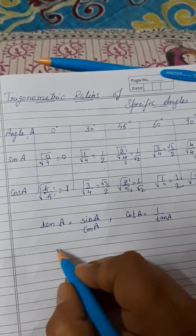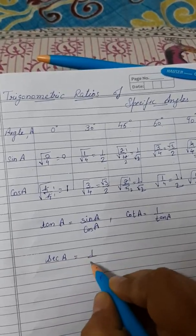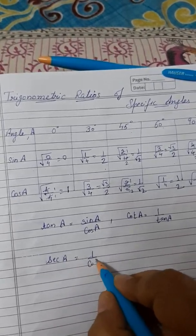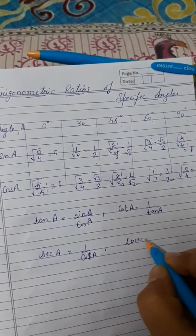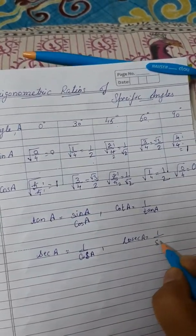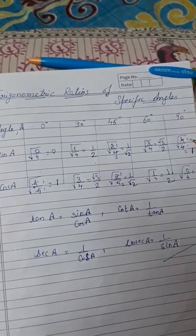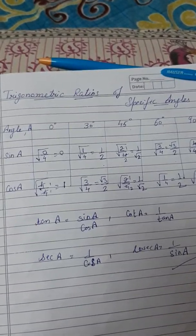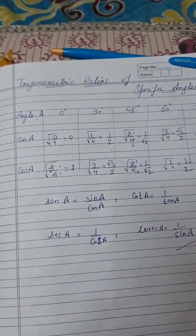And similarly, if secant is known, what is secant? 1 by cosine A. And what is cosecant? 1 by sine A, its reverse. So this is our basic table. That's all for today. If you like my video, please like it and don't forget to subscribe to my channel. Thank you.